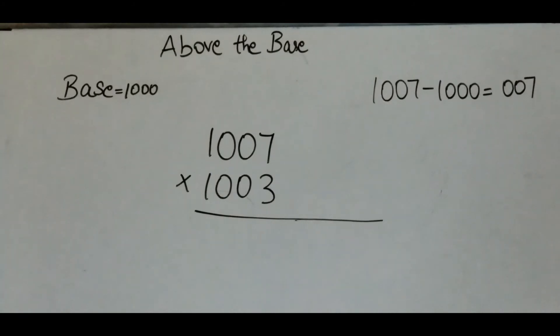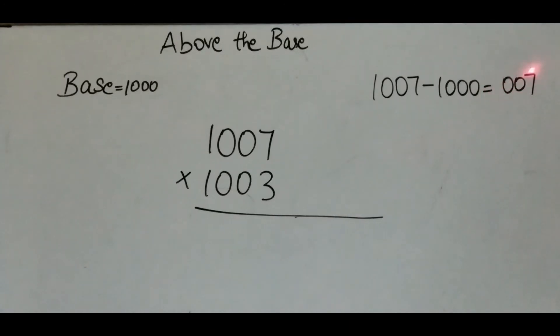First, subtract 1007 minus 1000 which equals 007. Put a plus sign over here. We put a plus sign there to show that 1007 is greater than the base.